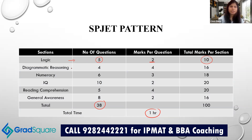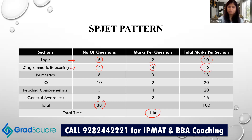The second section is Diagrammatic Reasoning, also called Visual Reasoning, with image-based questions. There are four questions, each carrying four marks, for a total of 16 marks. The third section is Numeracy, with questions based on quantitative aptitude — six questions at three marks each, totaling 18 marks.